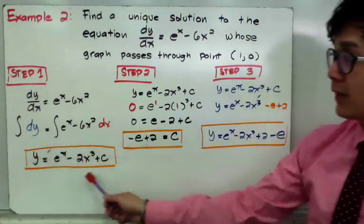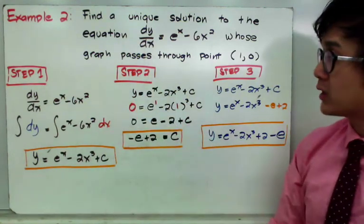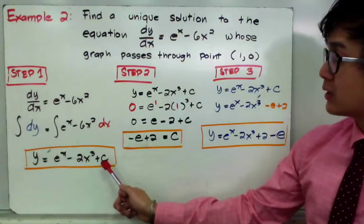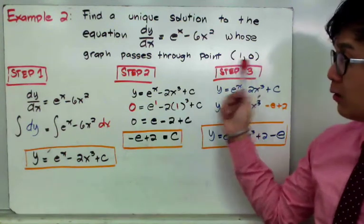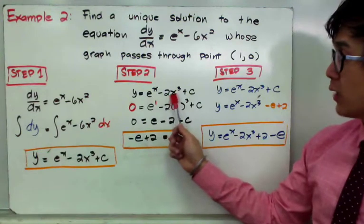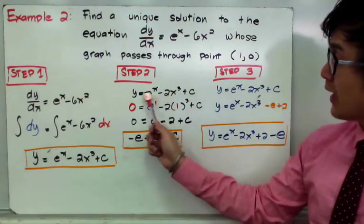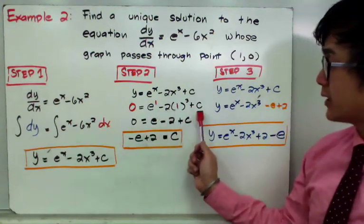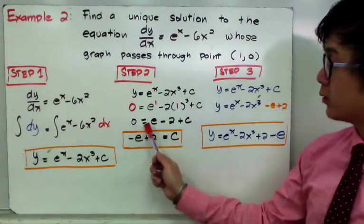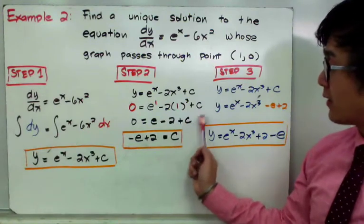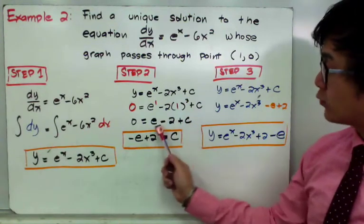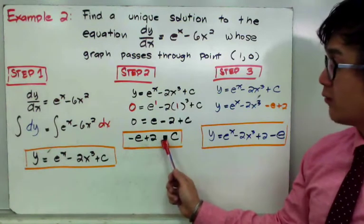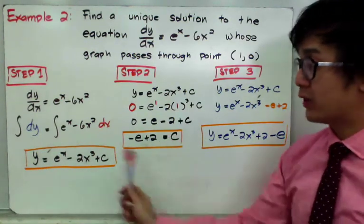The second step is to find the specific value of C by substituting the point (1, 0) into our function. Replacing x with 1 and y with 0 gives: 0 = e^1 minus 2 times 1 cubed plus C, which simplifies to 0 = e minus 2 plus C. Isolating C, we get C = negative e plus 2.